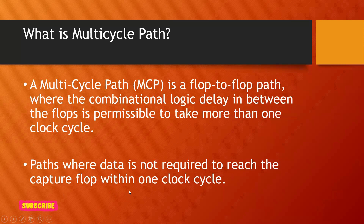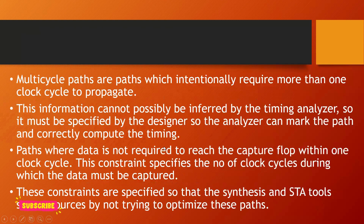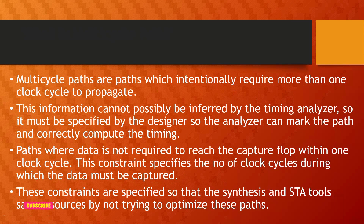These are paths where the data is not required to reach the capture flop within one clock cycle. Multi-cycle paths are paths which intentionally require more clock cycles because there is a combinational logic taking more number of clock cycles to complete. This information cannot be inferred by the timing analysis tool — the designer has to specify it by providing multi-cycle path constraints.